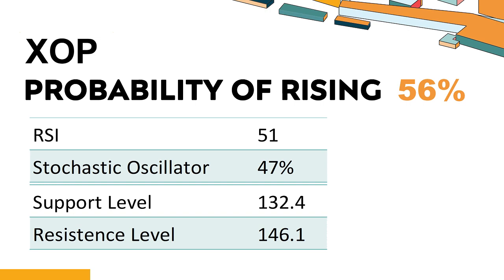XOP's short-term support level is around 132.4. If it falls below this level during the session, it will have a chance to test 132.4. XOP's short-term resistance level is 143.8. If it breaks through this level during the session, it will look up to 146.1.